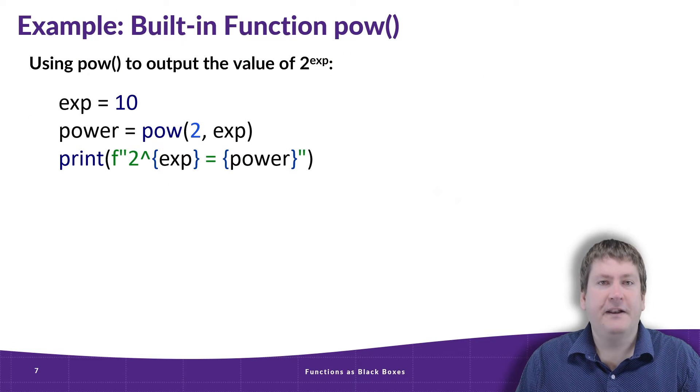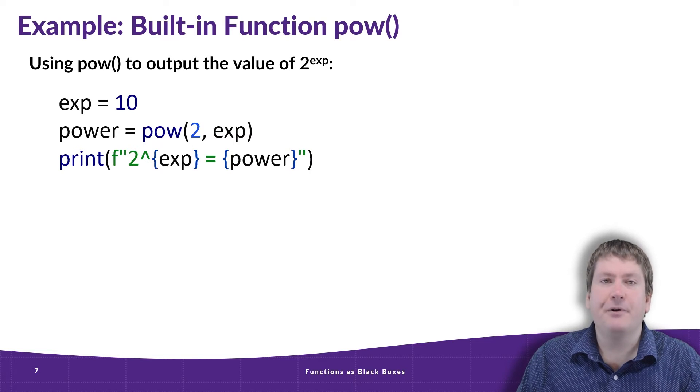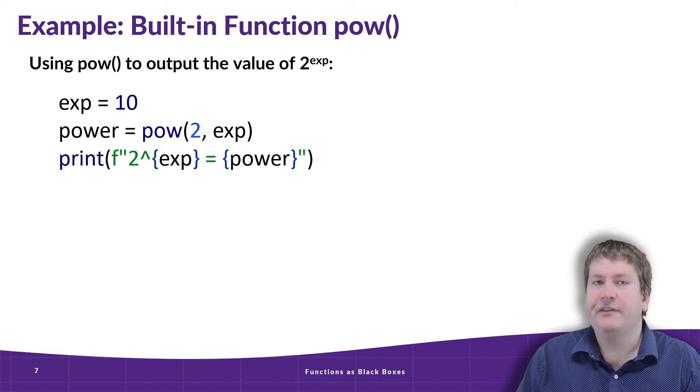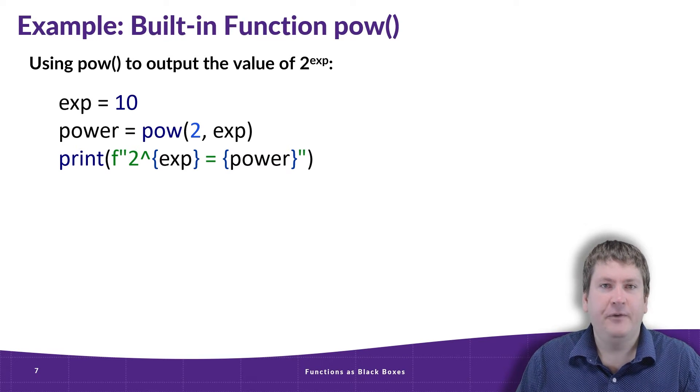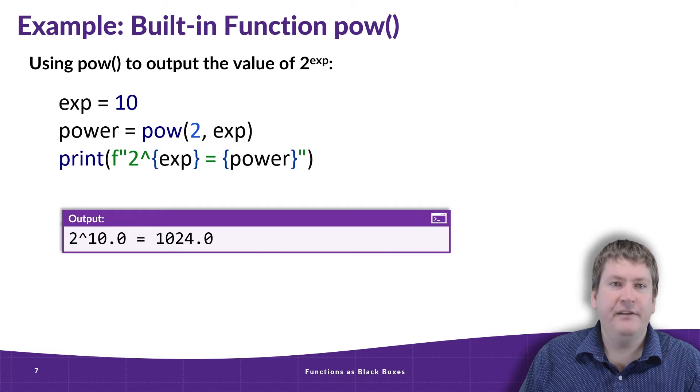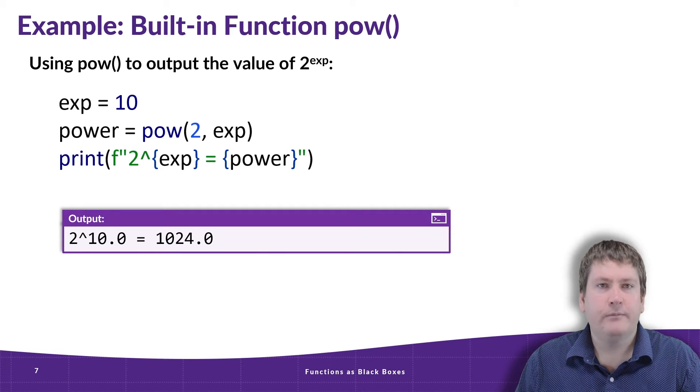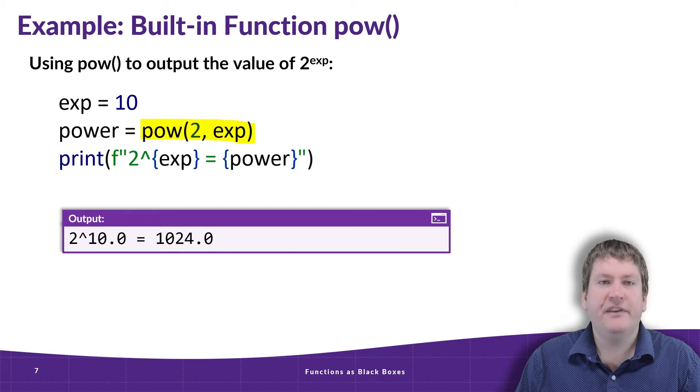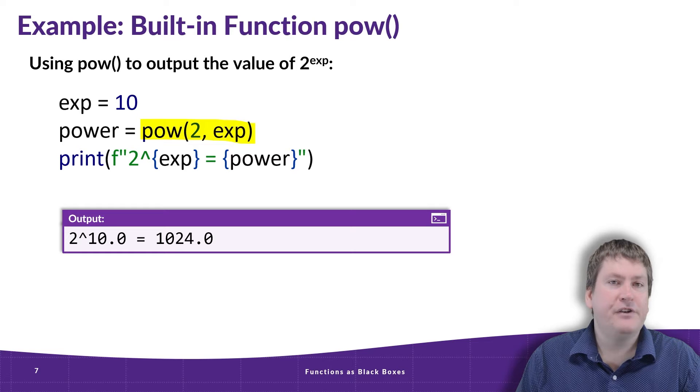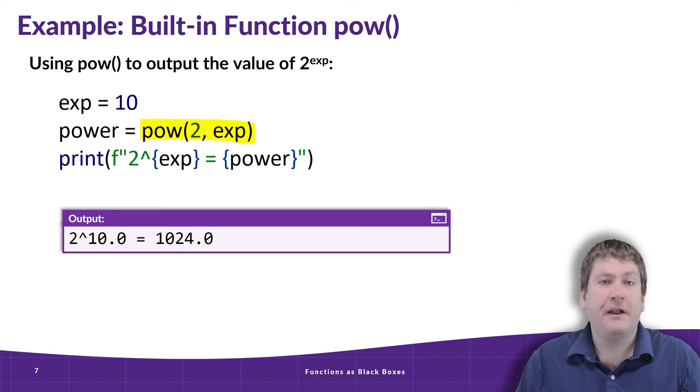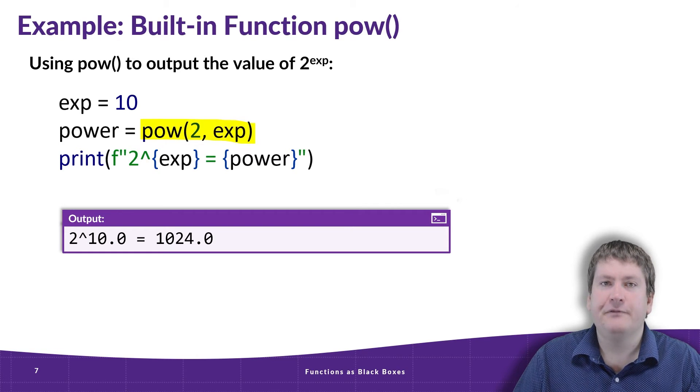Let's take a look at an example. Here we have a fairly straightforward example where we're raising 2 to the power of something, where that something is hard-coded in the variable exp, and right now that's set to 10. So if we were to run this code, we get an output that looks like: 2 to the power of 10 is 1024. And what really powers this is this call to the pow function. This is that built-in function in Python that raises a base to a certain exponent.